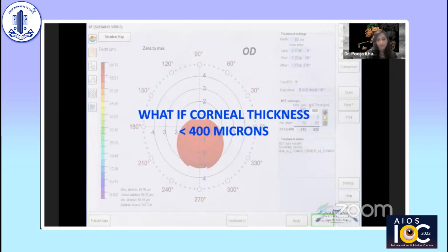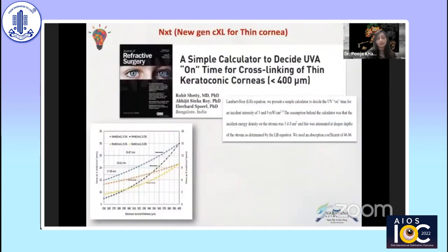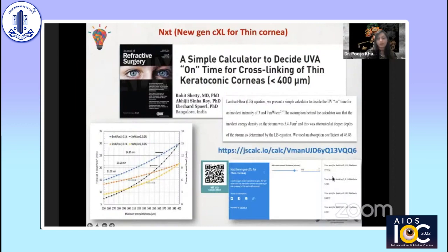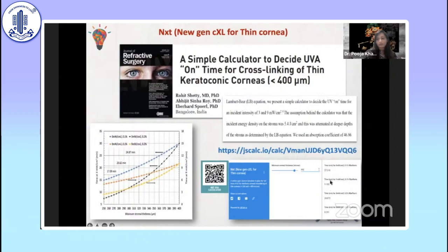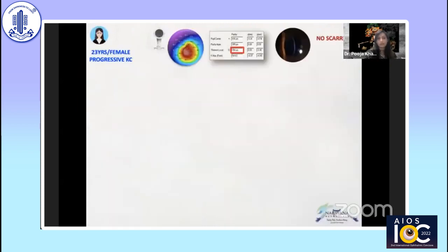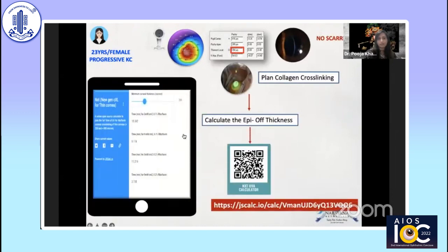What if the corneal thickness is less than 400 microns? Are we still justified in doing cross-linking for these patients? The answer is yes. We have a calculator where we can customize the fluence for 3 mW or 9 mW protocols. So the first choice of management is not keratoplasty — we can still proceed with cross-linking. This algorithm was devised by the father of cross-linking, Wollensak, and we have converted it into a calculator where we enter the thickness, select the protocol, and it tells us the appropriate fluence time.